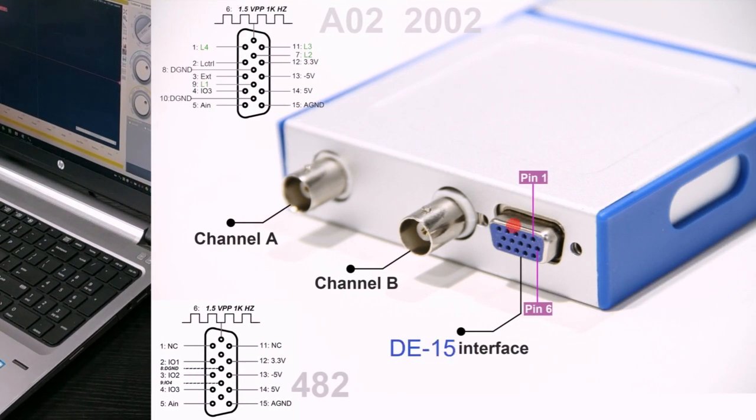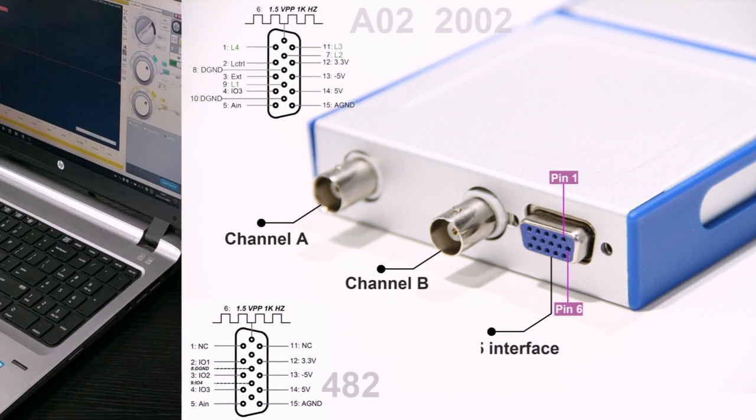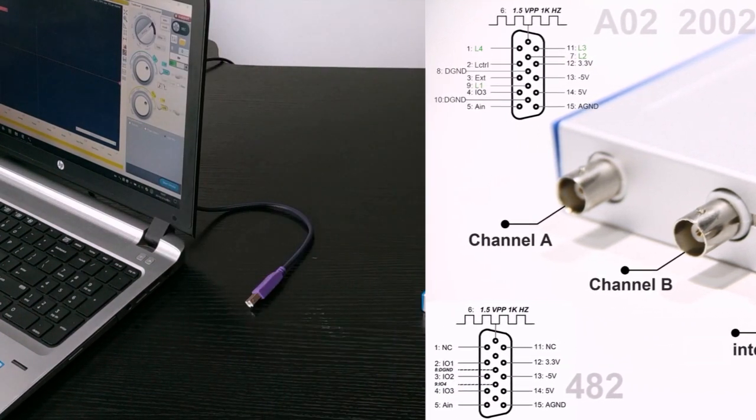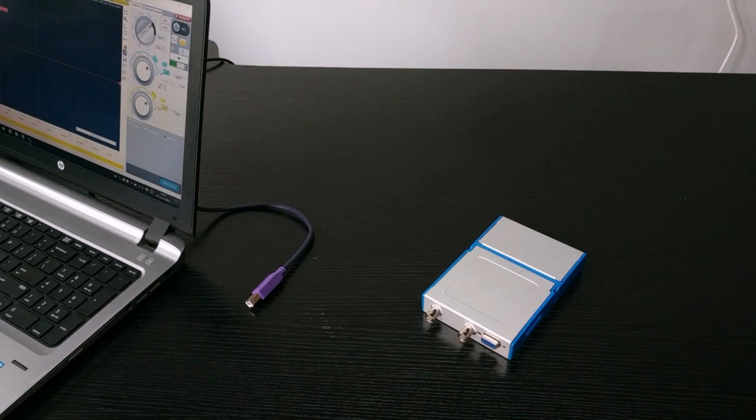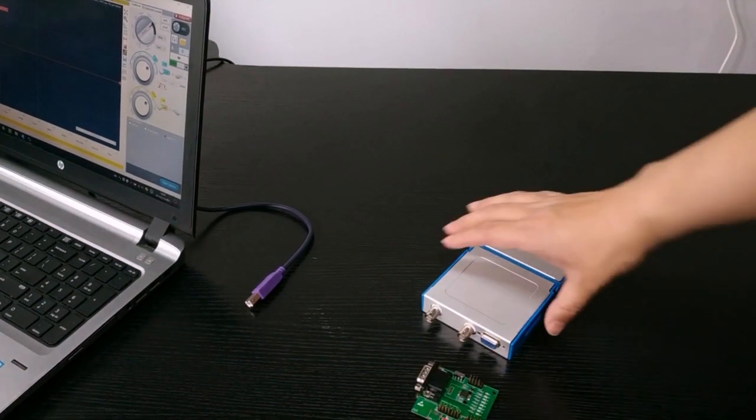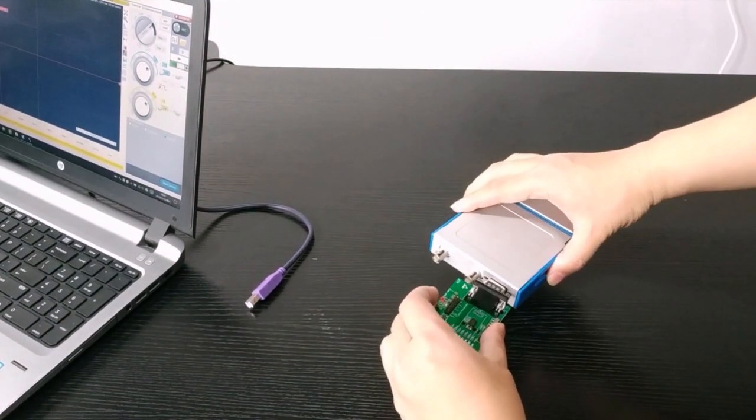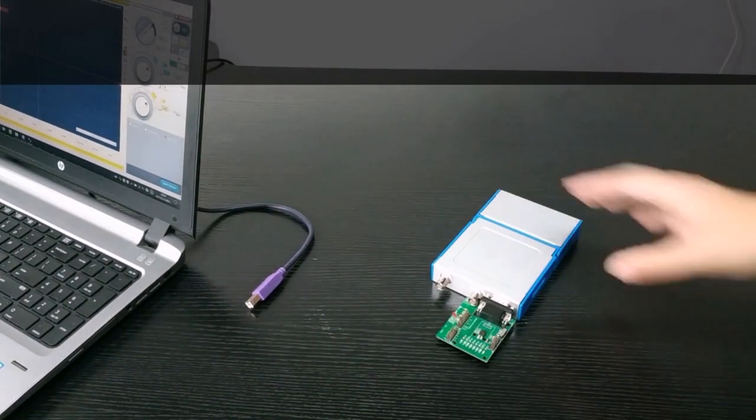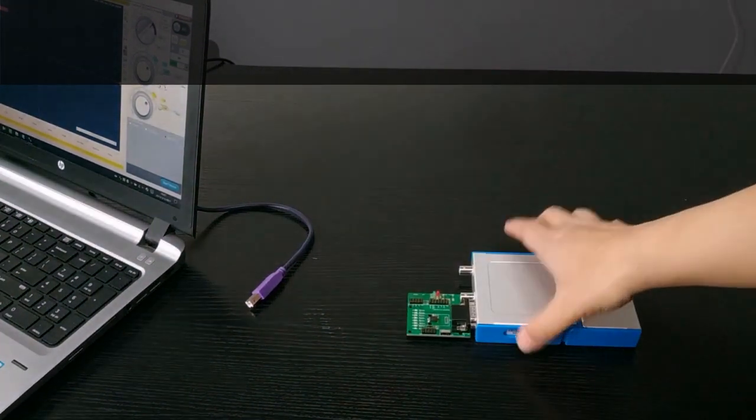On the oscilloscope software it is possible to open another panel with the settings for the signal generator. On this panel we can change the shape of the generated wave. Now it is a triangle wave. We can change it to a sine wave or we can change it to a square wave.